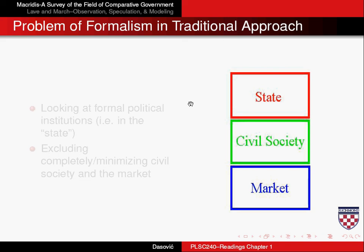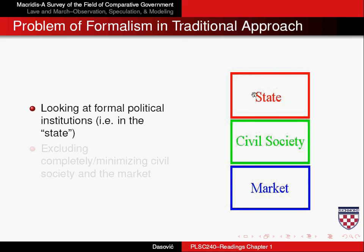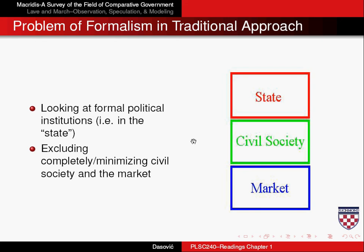So what does formalism mean? When Macried says that the traditional approach to comparative politics was formal, it means that comparative political scientists were generally looking at formal institutions — i.e., the state. So if they wanted to understand why some countries are more democratic or more authoritarian, they looked only at the state level. There has been a tremendous surge in looking at civil society institutions — for instance, how religiosity affects democracy or authoritarianism. Formalism didn't look at civil society or market institutions. What about the size of an economy and how that affects democracy? The formal approach didn't look at that at all — it looked exclusively at the state, to the neglect of civil society and the market.